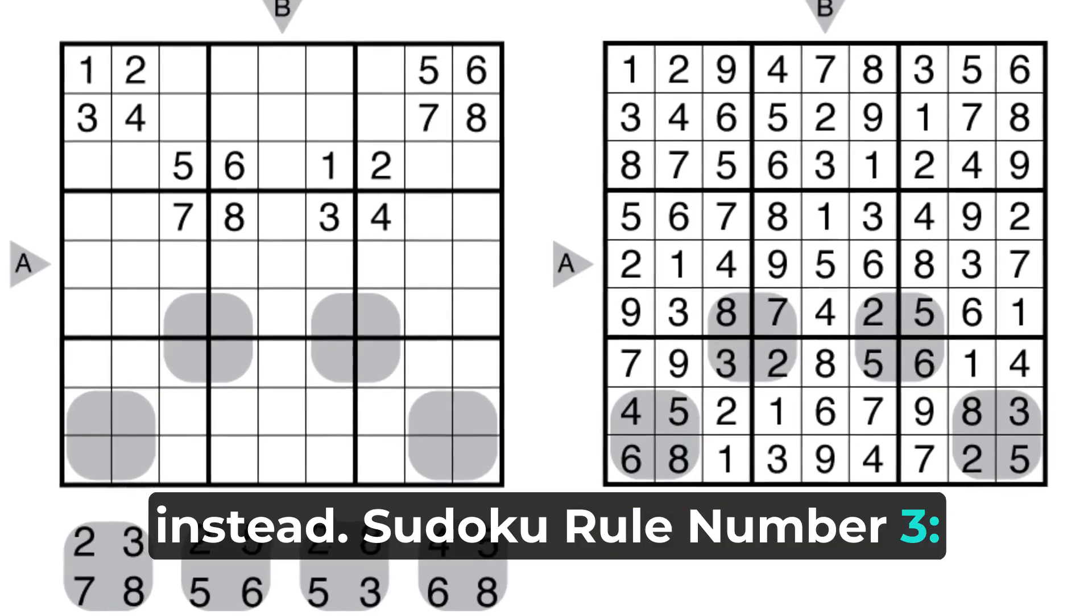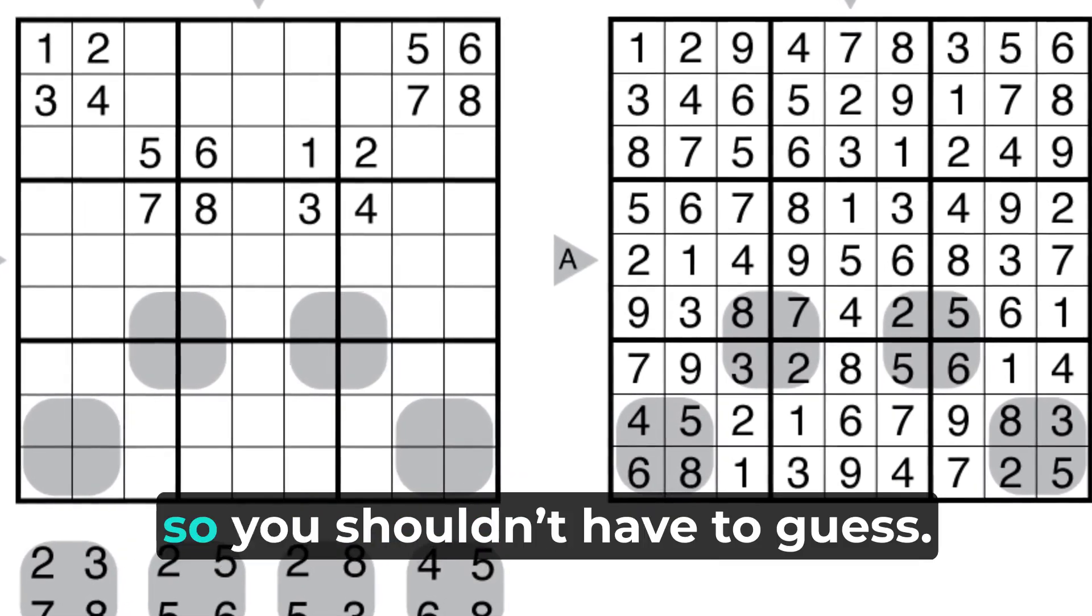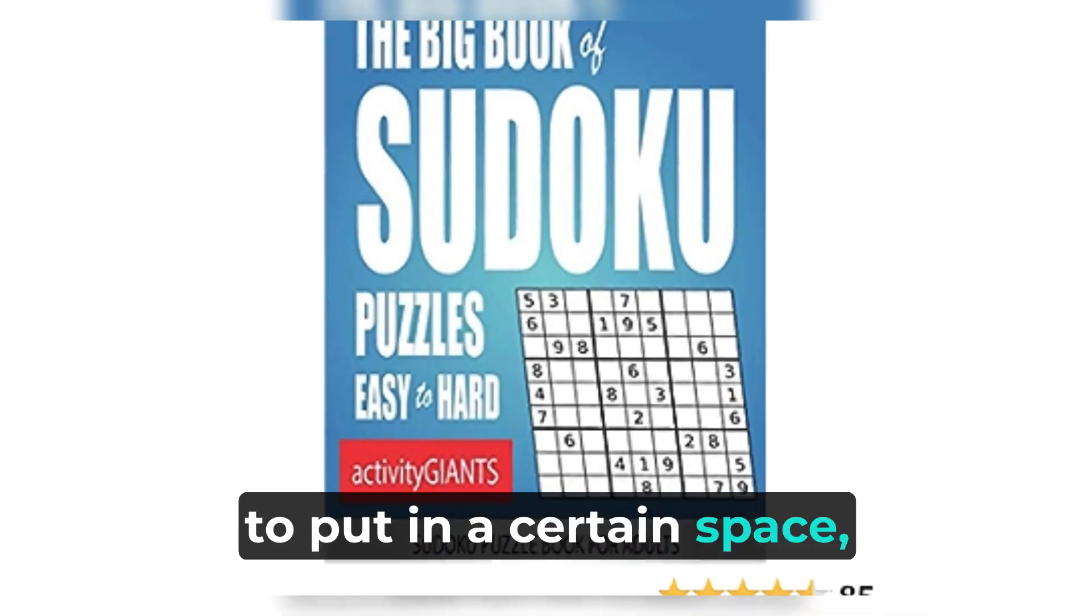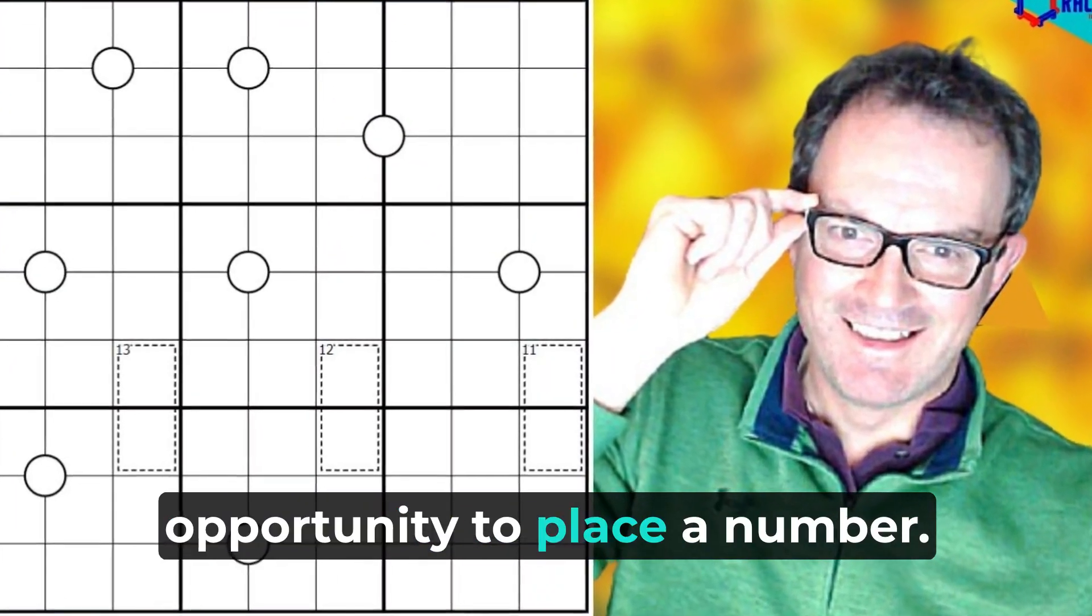Sudoku rule number three: don't guess. Sudoku is a game of logic and reasoning, so you shouldn't have to guess. If you don't know what number to put in a certain space, keep scanning the other areas of the grid until you see an opportunity to place a number.